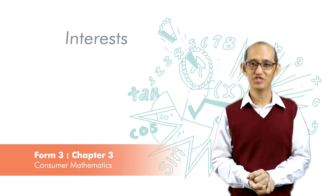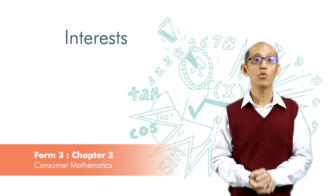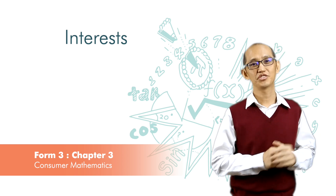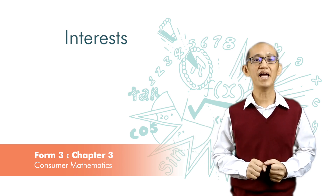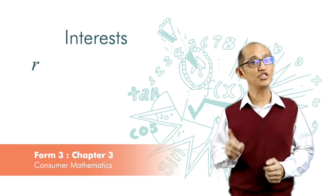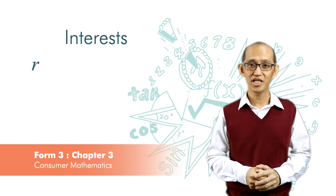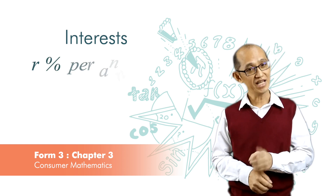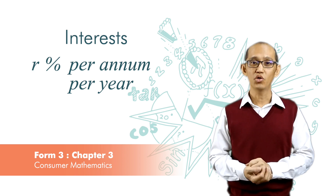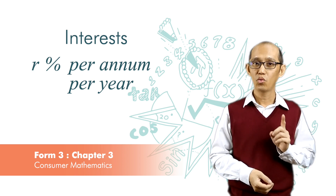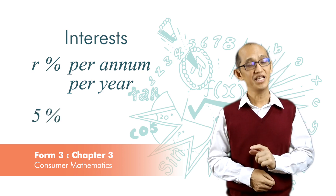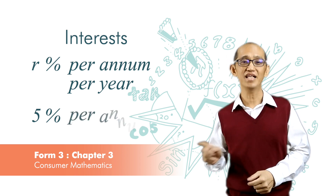Next, we want to look at interest. When we put money in the bank, we are paid interest. When we borrow money from banks, we are charged interest. Interest rate is quoted in percentage per annum, that is per year. So when the interest is 5%, it is 5% per annum.